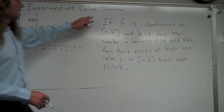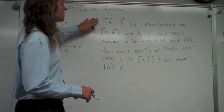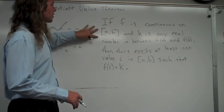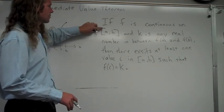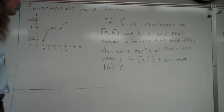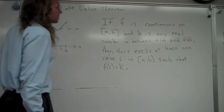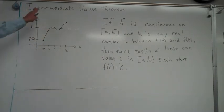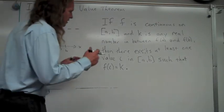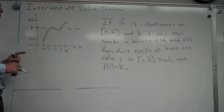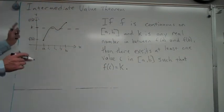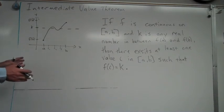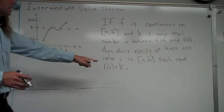So it says if f is continuous on the closed interval from a to b, so these brackets make it closed meaning it includes a to b, and k is any real number in between f(a) and f(b), so those are the two requirements that have to happen for the intermediate value theorem to hold true. Then there exists at least one value c, so in this case you can see there was a few of them, in this interval between a and b such that f(c) is equal to k.